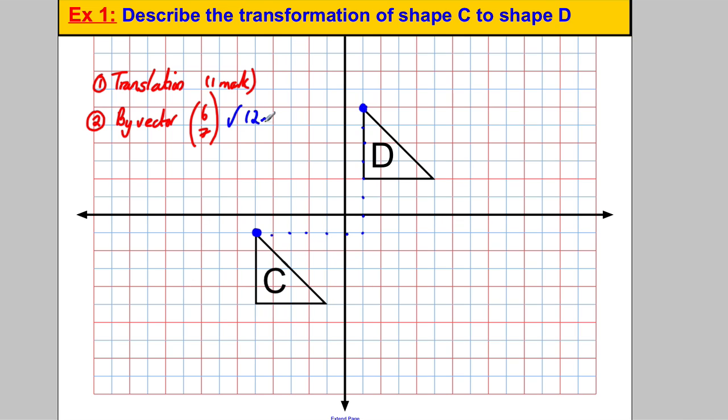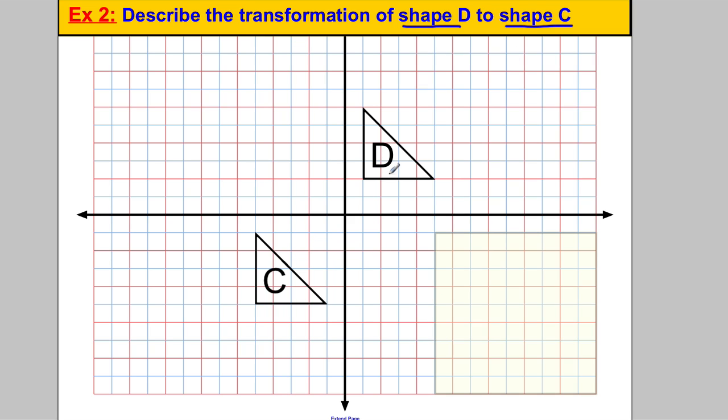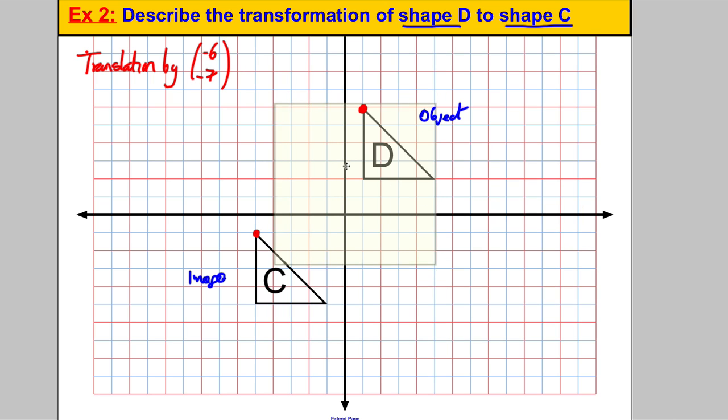Let's try another one. How would we describe the transformation of shape D to C? It's important to realize which is the object and which is the image. We've swapped the roles here. Counting from corner to corner, we're going one, two, three, four, five, six left, so it's a translation by vector negative 6. Then one, two, three, four, five, six, seven down: negative 7.